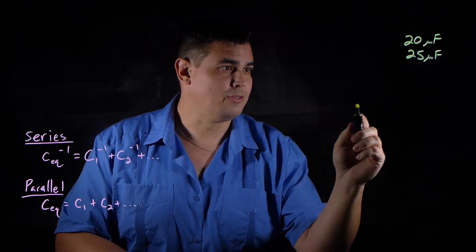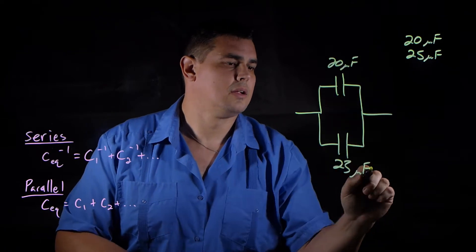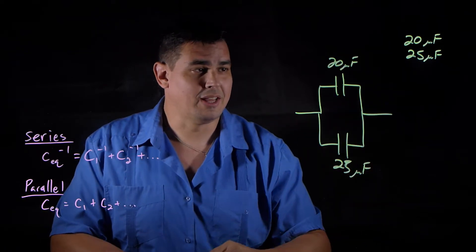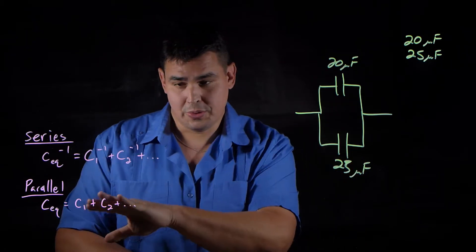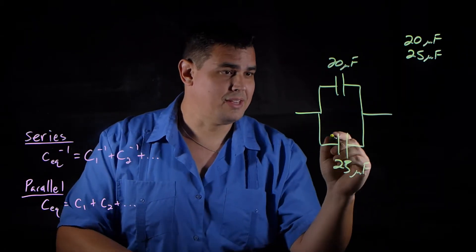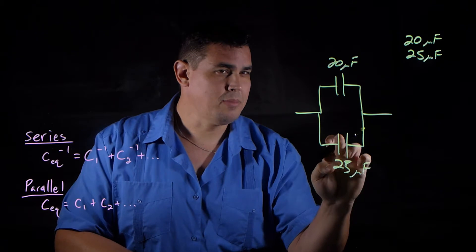So let's do parallel first. In parallel, it would look like this. So in parallel, basically all you're doing is adding them up. What's happening is see how these two plates, like in between the plates, it's not conducting.